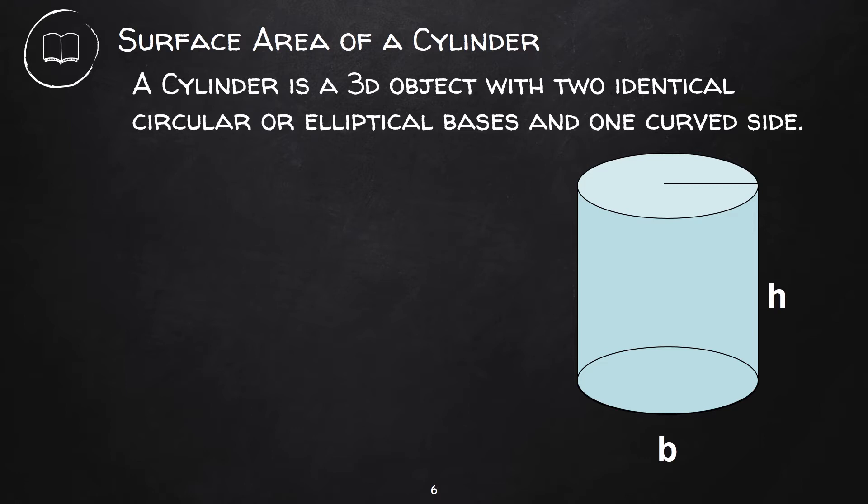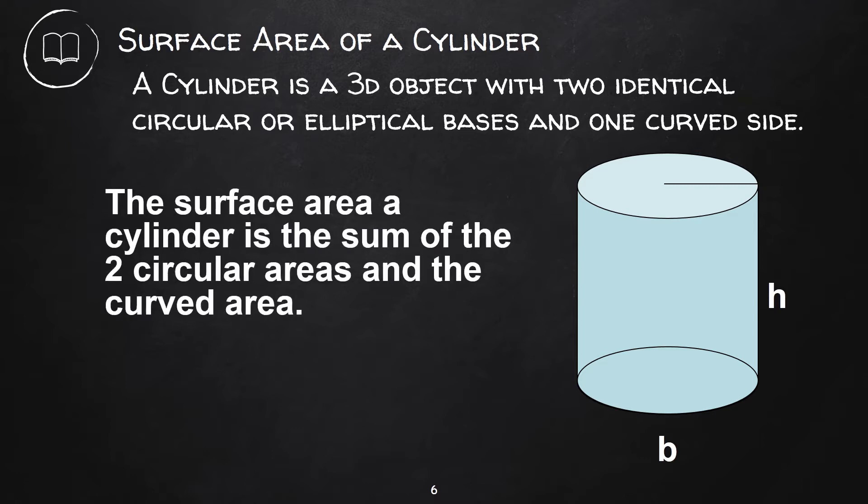The surface area of a circular cylinder is the sum of the two circular bases and the curved area. So, the surface area is 2πr² + 2πrh.